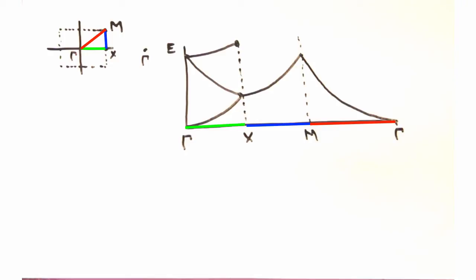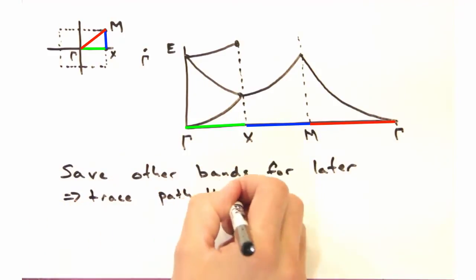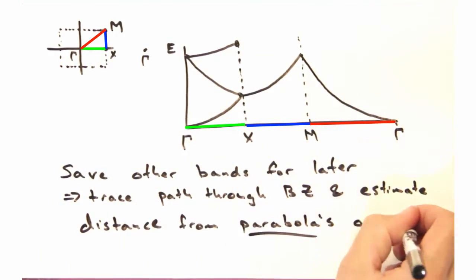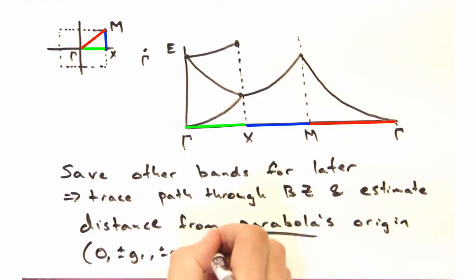What about the other two parabolas? I think this is actually a really good homework problem. So we're going to stop with this example for now. And if you're ever in doubt, trace the path in the first Brillouin zone, and try to get an estimation of whether the distance from your parabola's origin increases or decreases.